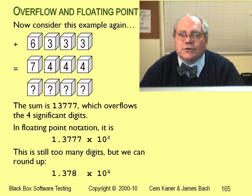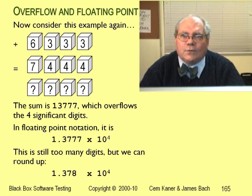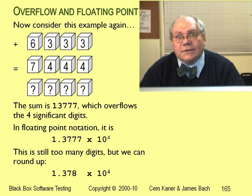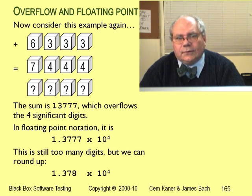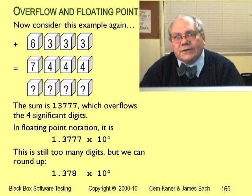Let's go back to our example of an integer overflow. We still only have four significant digits, so we can't store 13,777. But we can represent 13,777 in floating-point notation. We represent it as 1.378 times 10 to the fourth. We've round up the least significant digit to squeeze it into a four-digit mantissa. So the mantissa is 1.378.